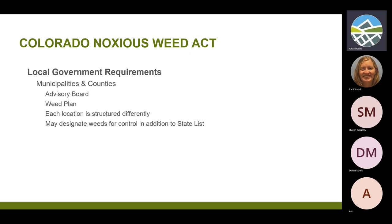In JEPCO, our advisory board is our board of county commissioners. They have to have a weed plan, and each location is structured differently. Some have advisory boards made up of local government representatives; some have private property owners serve on it. The law requires that the majority of the advisory board is made up of private property owners. For counties, it has to be within an unincorporated portion of the county, and the majority of members have to have 40 acres or more. Local entities can also pass an ordinance and add additional plants to their weed list.